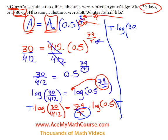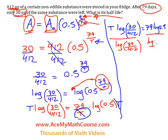Running out of room like always. 79 log half. Now, how can I solve for T? I can just divide both sides of the equation by log 30 over 412, so they cancel out.